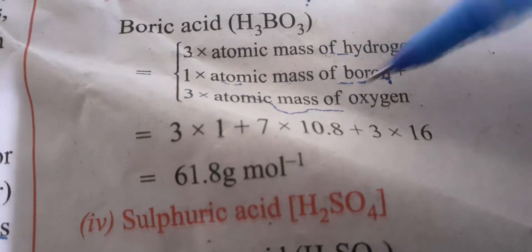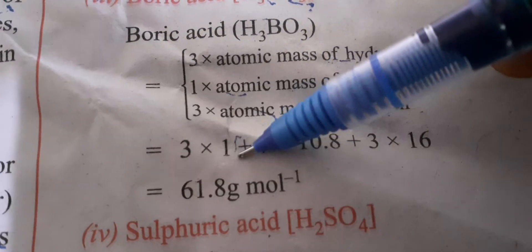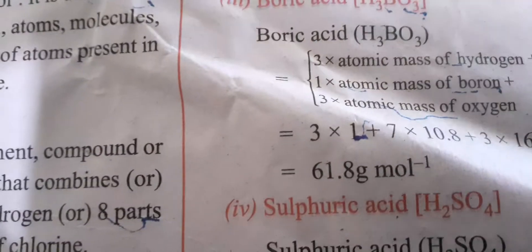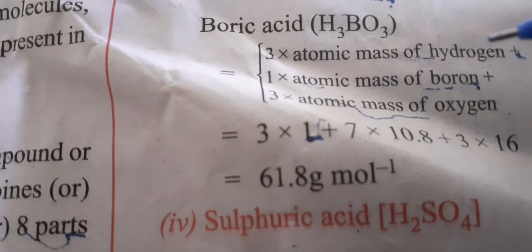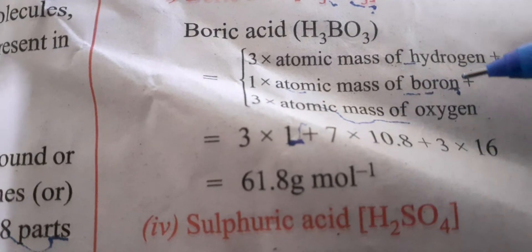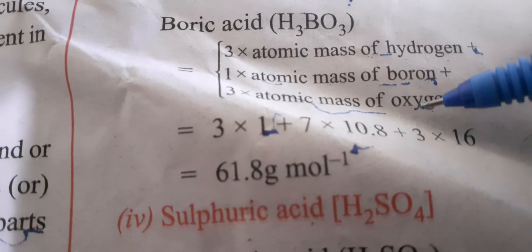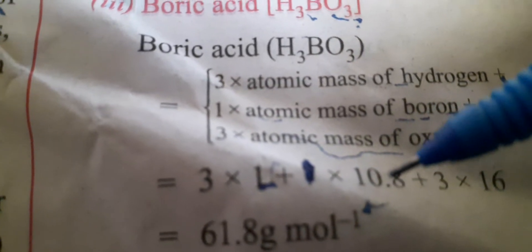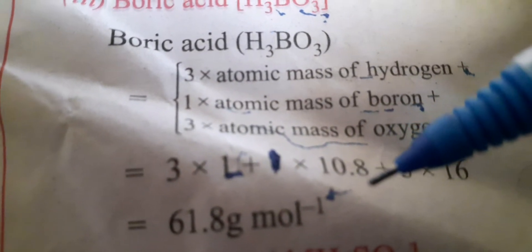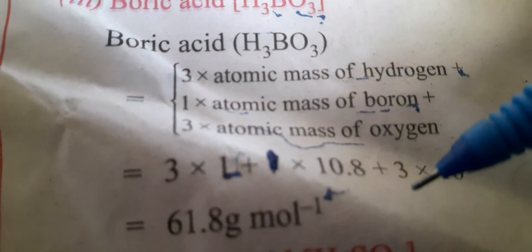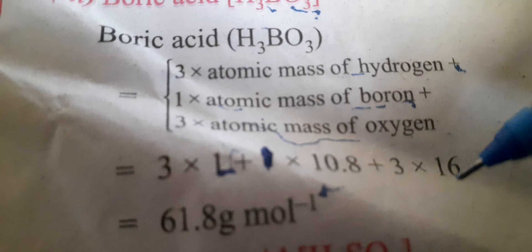3 times atomic mass of hydrogen is 1. Then 1 times atomic mass of boron is 10.8, plus there are 3 oxygen atoms, so 3 times atomic mass of oxygen which is 16.